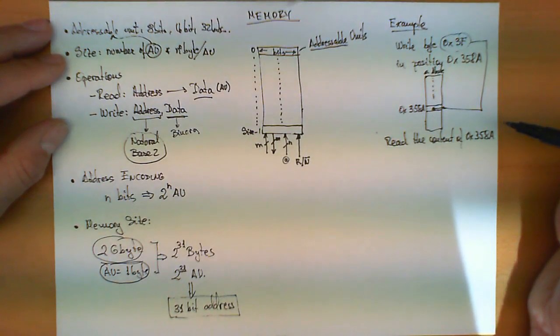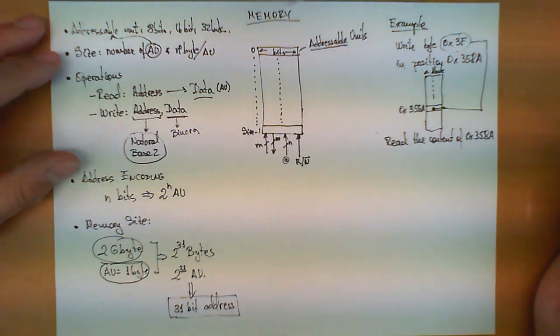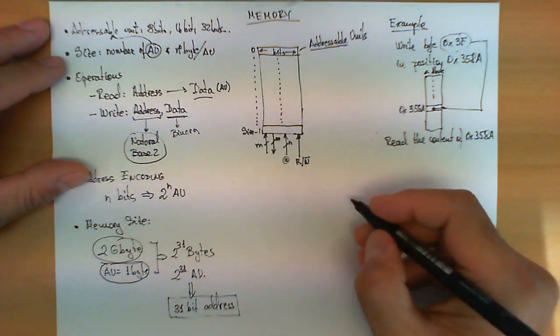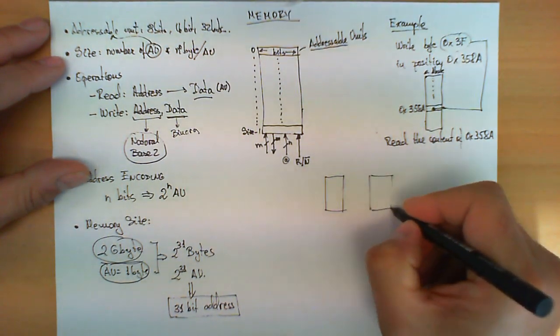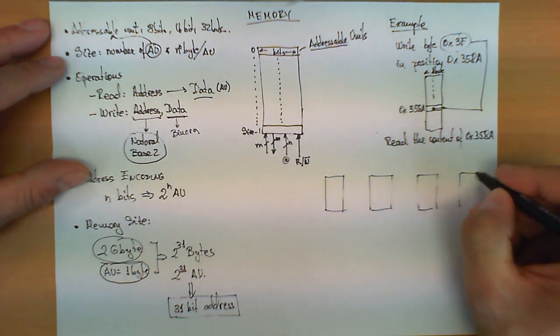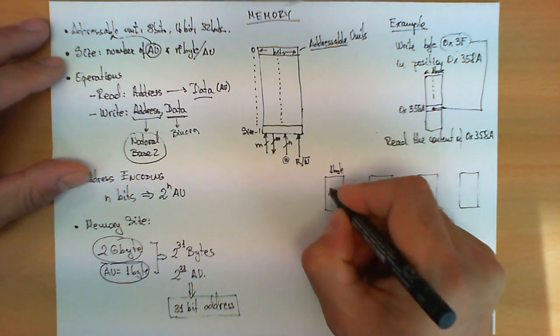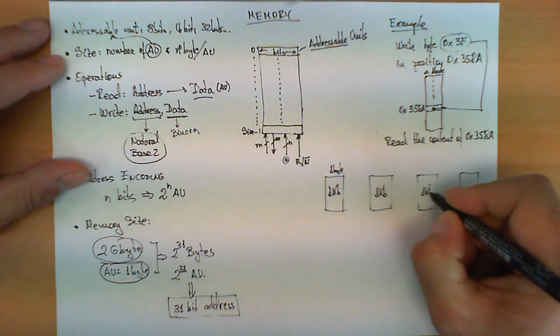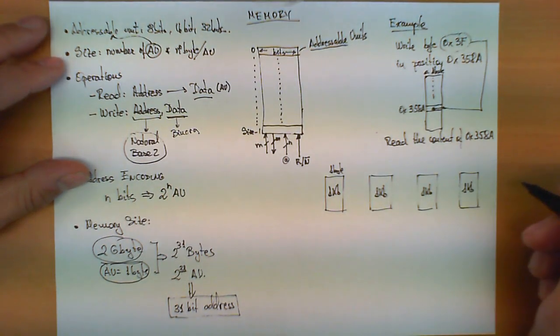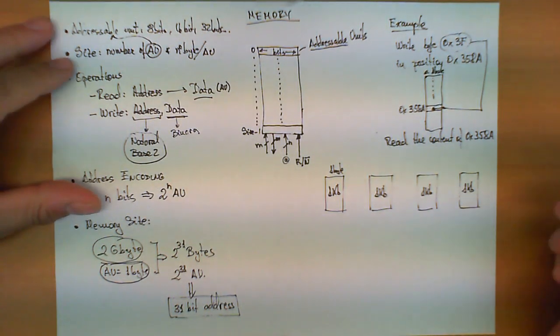Another interesting property of these memory chips is that they can be combined to obtain a bigger chip having more capacity. Let's see this with an example. Suppose that I am given four chips of memory, let's suppose that the addressable unit is one byte in each one, and the size is 1kb each. These four chips can be combined with a little bit of logic to obtain a 4kb chip, or a 4kb memory bank.